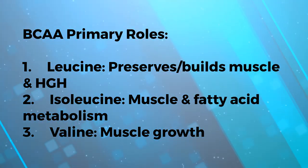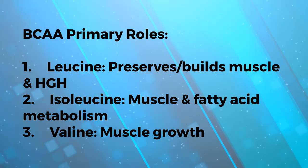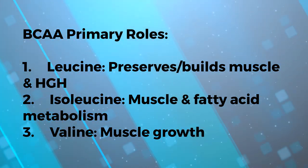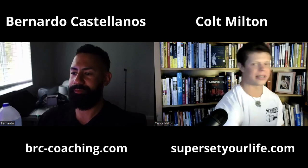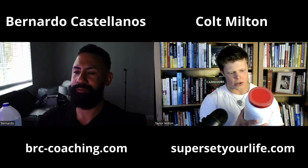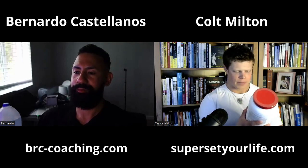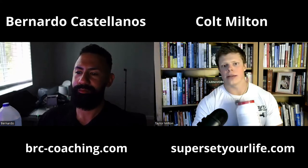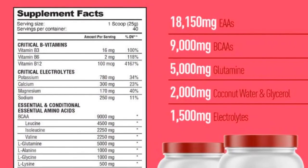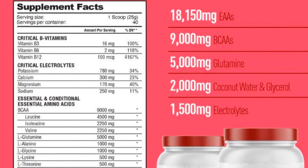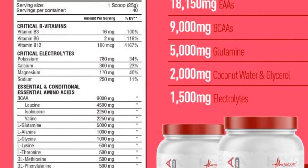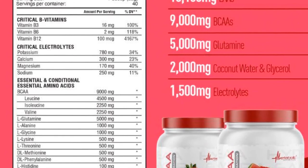I'm going to send one of these your way — it's called Hydra EAA by Metabolic Nutrition. One scoop has 4,500 milligrams — four and a half grams — of leucine. The owner Jay and his wife both live ketogenic lifestyles. This glycodextrin bypasses the whole digestive process that would occur when you consume sugar, so it goes into your muscle cells without being digested like normal food, and it doesn't spike your insulin.